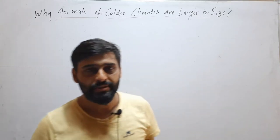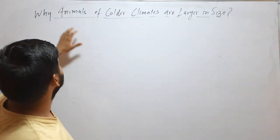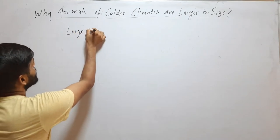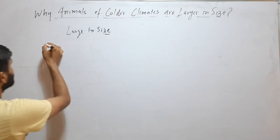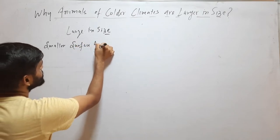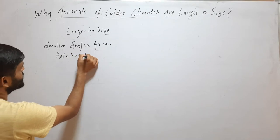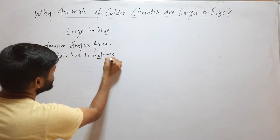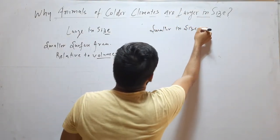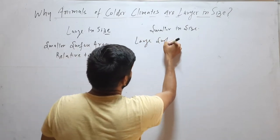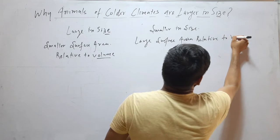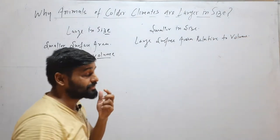Hello friends, welcome to my YouTube channel. In this video we will discuss a question: why animals of colder climate are larger in size. We know that animals which are large in size have smaller surface area relative to volume, but animals which are smaller in size have large surface area relative to volume. Let us understand this with the example of a cube.